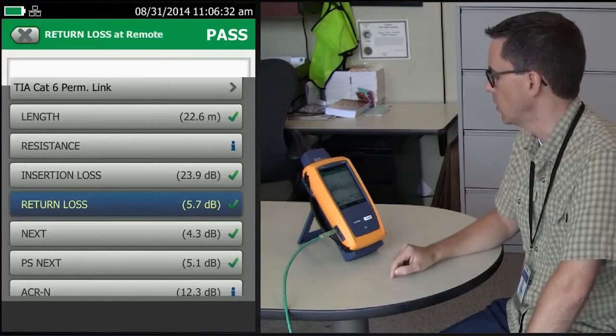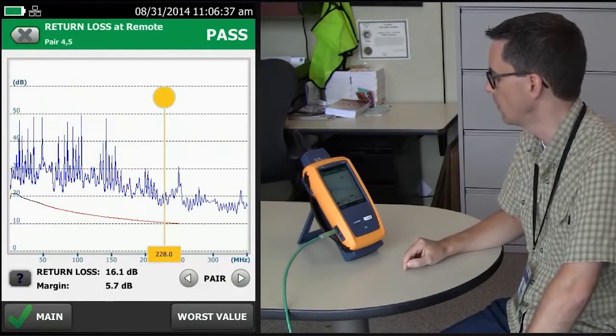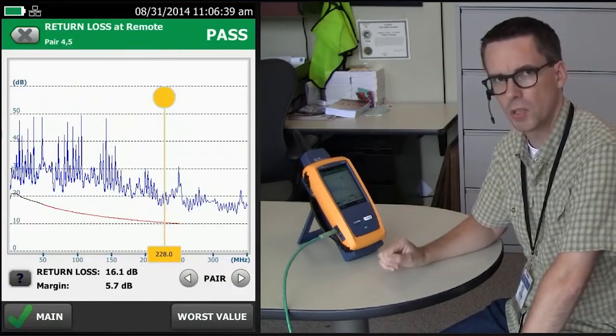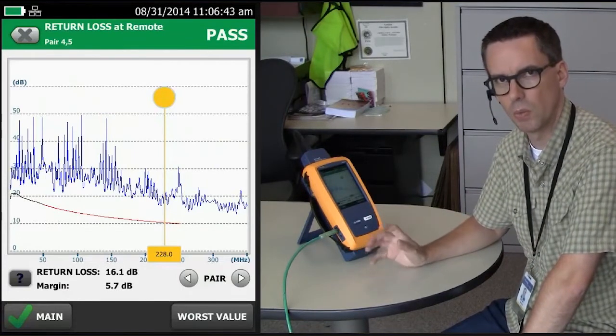When we go and look at our return loss result here, and I'll go and look at our worst performing pair. If you look very closely, part of the limit line is black, part of it is red. What's that about?